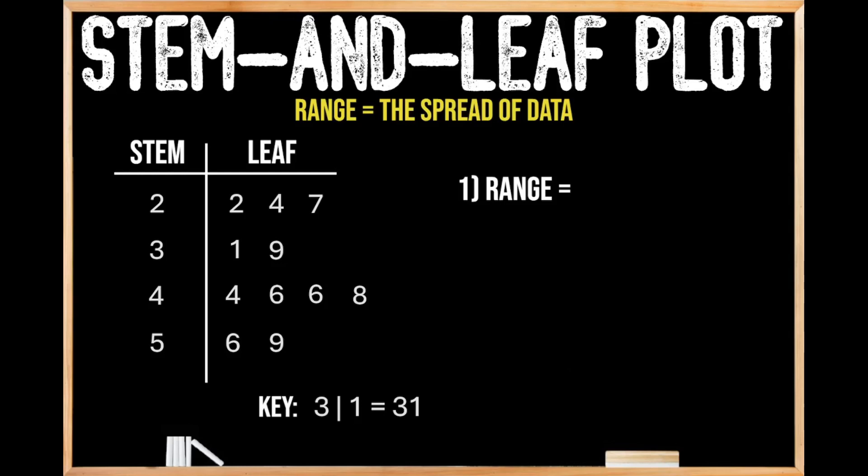The first thing we're going to do is locate our highest value in our stem and leaf plot. So first we're going to find our highest stem, which in this case is 5, and we're also going to find our highest leaf, which in this case is 9. So that means that our highest value is 59.